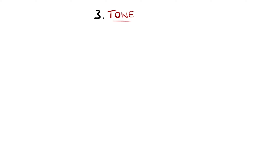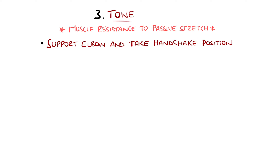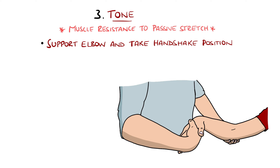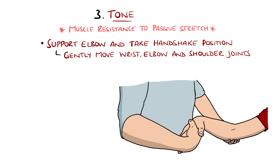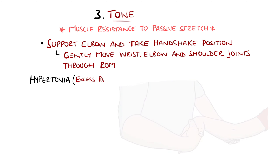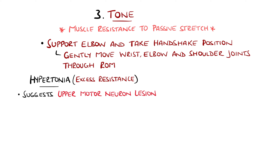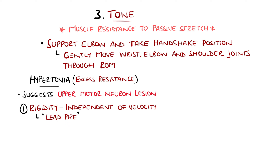We then move on to tone, which is the muscle's resistance to passive stretching. For the upper limb, we test this by supporting the patient's elbow and holding their hand in a handshake position, asking them to allow the examiner to take the weight of the limb and gently move the wrist, elbow, and shoulder through the ranges of motion. Excess resistance is termed hypertonia and mostly reflects an upper motor neuron lesion. Both rigidity and spasticity are examples of hypertonia, but rigidity is independent of velocity — meaning that regardless of how fast the limb is moved, the resistance feels similar — sometimes called lead pipe rigidity.